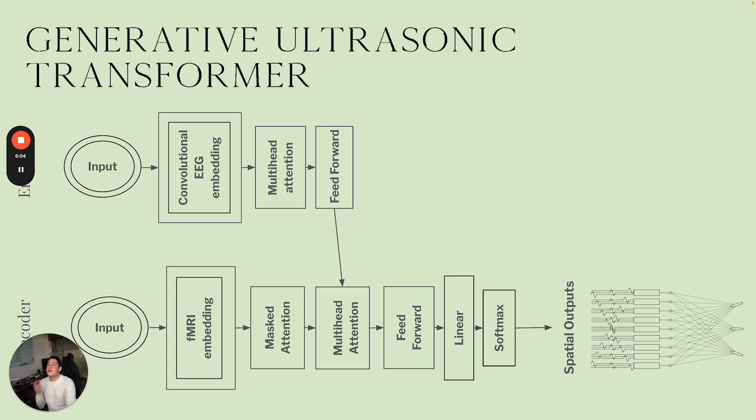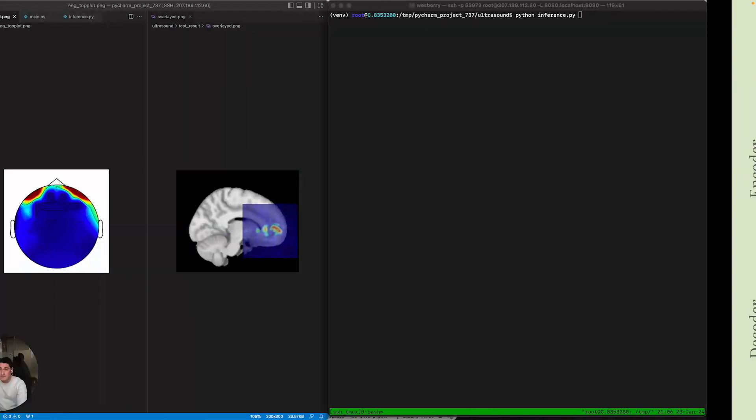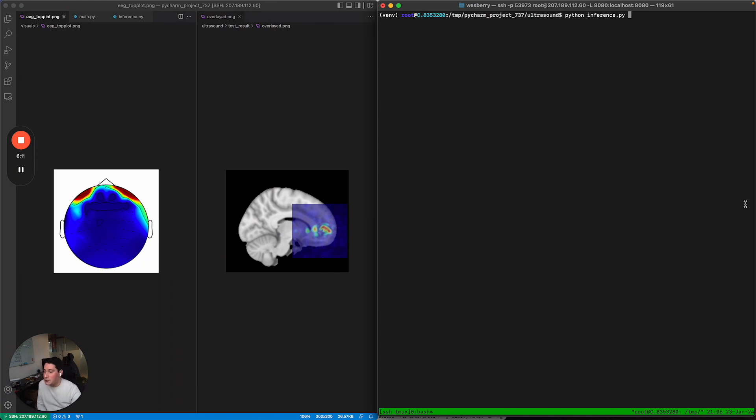Now, I don't want to just show you a diagram. I want to show you what we've built. I want to show you Morpheus 1. So here we're in a terminal. On the left, you're going to see the EEG, which would be coming from the halo headband on your forehead. And then on the right, you're seeing in simulation software, the outputs of the pulses in the prefrontal cortex. Now, I'm going to click enter here.